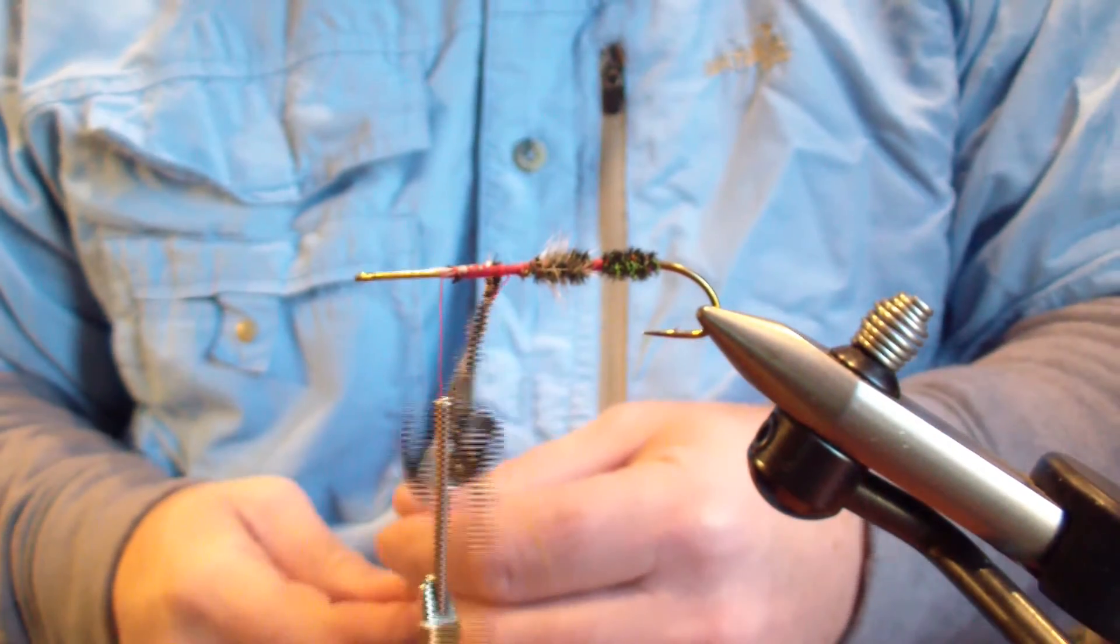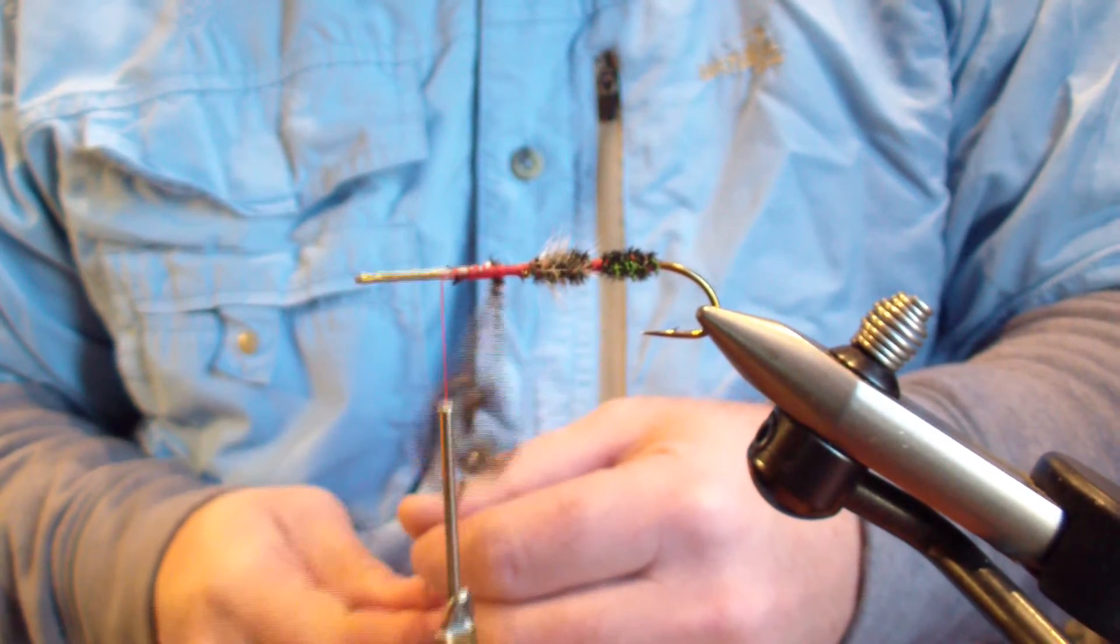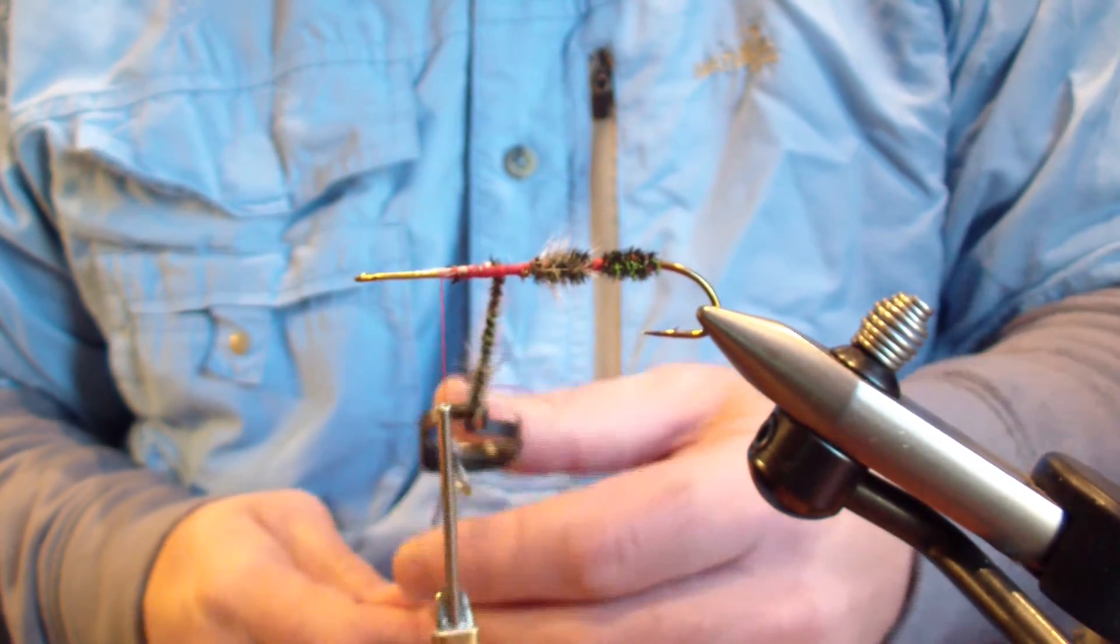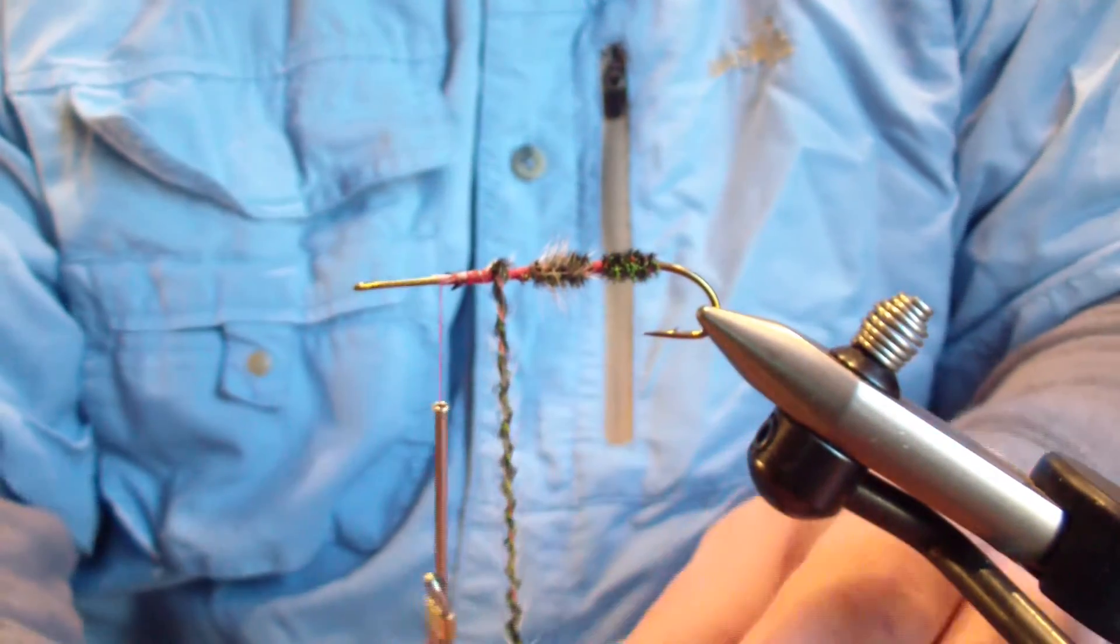And we're going to twist this the same way as we did the last one. Make sure we start to get the hackle popping all the way back to the shank of the hook. And then we're going to wrap it in.